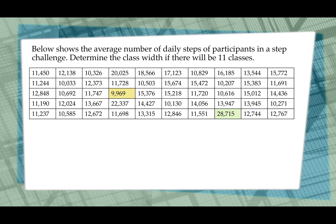And our last example. Below shows the average number of daily steps of participants in a step challenge. Determine the class width if there are to be 11 classes. And so I put the data in just a random order, but because we're not really looking to see if we can locate the largest and smallest, I highlighted them for us to make our lives a lot easier. And so let's see what we're going to do. First, we're going to calculate the range. So we're going to do 28,715 minus 9,969. And when we subtract, we end up with 18,746.